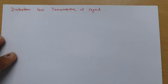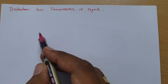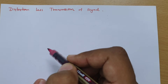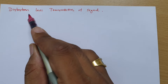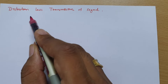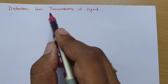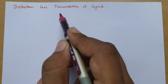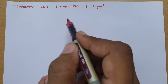Welcome to the signal and system lecture series. In this session, I will be explaining distortion-less transmission of a signal — specifically, what conditions apply to its magnitude spectrum and phase spectrum.